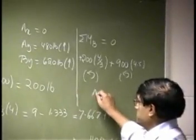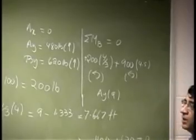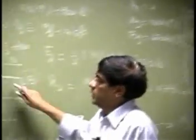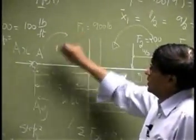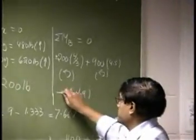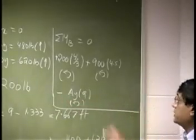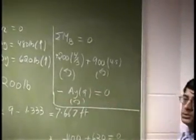Then you have the last force which is Ay. That is a distance of 9 feet. Now, about this point, this is going to produce a clockwise movement. So I could make this negative, change this to counterclockwise. And this should add up to 0.